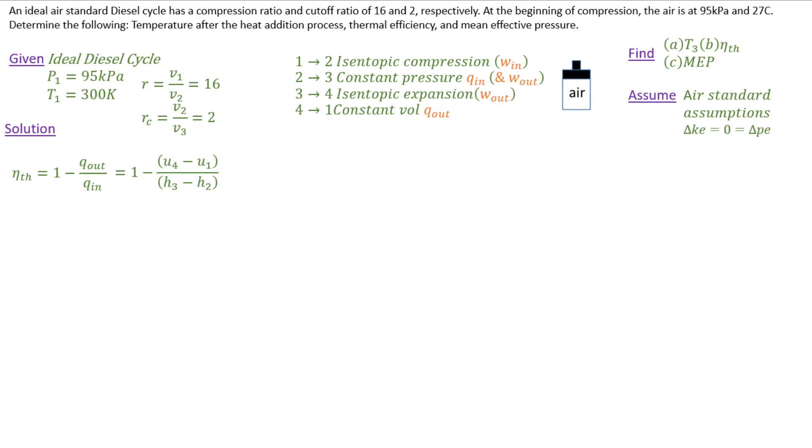The mean effective pressure is W_net_out over V_max minus V_min, but I could put that in terms of specific work and specific volumes. And of course for any cycle, work net output equals Q net input, so I could put the mean effective pressure in terms of just Q_in and Q_out as well.